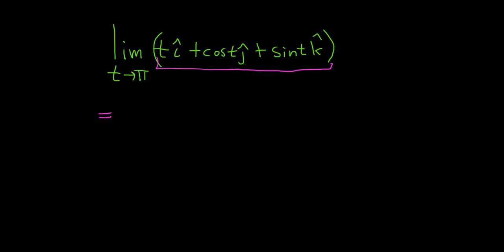We're in a position where we're ready to actually take the limit. So you just take the value of pi, and you plug it in for all of the t's. This will be pi i-hat plus cosine of pi j-hat plus sine of pi k-hat.